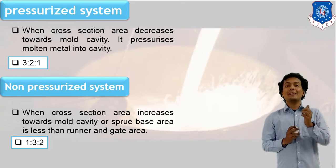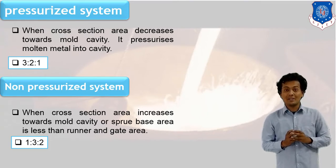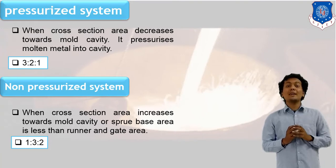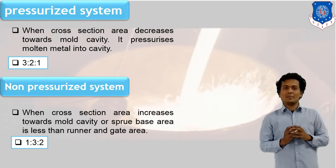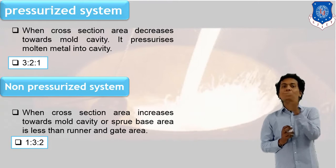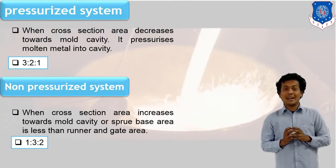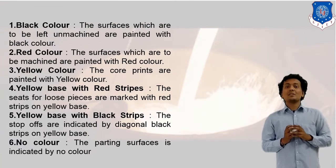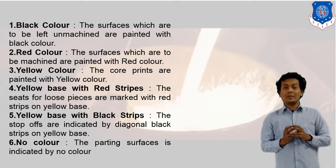If the cross-sectional areas are in strictly decreasing order, the system is known as a pressurized system. But if the areas are in increasing order at any point, it will be considered a non-pressurized system. In simple words, if the digits are not decreasing towards the gate, it is known as a non-pressurized system. This is how we can classify the systems based on areas — this ratio is known as the Gating Ratio.